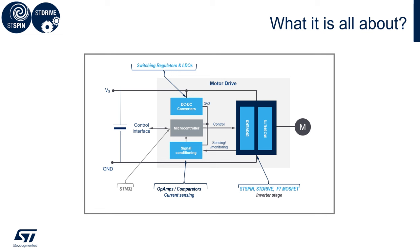In the middle, in the gray block, we see the microcontroller — this will not be part of this presentation. On the right side, in the dark blue block, we see the inverter section with the driver and the MOSFET. We also have a DC-DC converter or switching regulator or LDO, which regulates the voltage to 3.3 volts to supply the microcontroller or the driving section. And to close the loop, we have signal conditioning for current sensing.